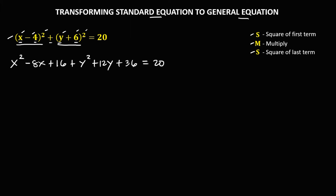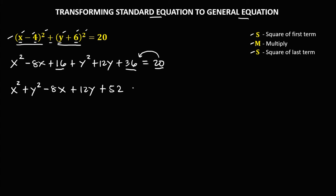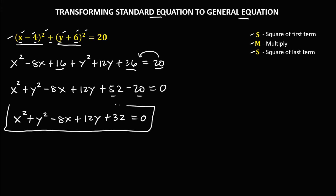Then equals 20. Arrange this equation starting with the highest exponent and combine like terms. So we have X squared plus Y squared, then negative 8X, then positive 12Y, and 16 plus 36 — that's 52. Transpose the positive 20 to the left side, so it becomes negative 20, equals 0. Simplifying: X squared plus Y squared minus 8X plus 12Y, and 52 minus 20 — that's positive 32 equals 0. This is the general equation.